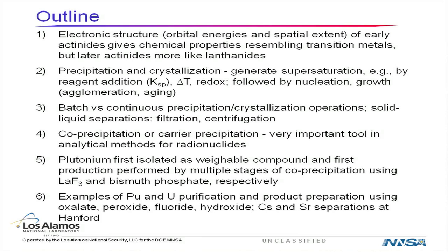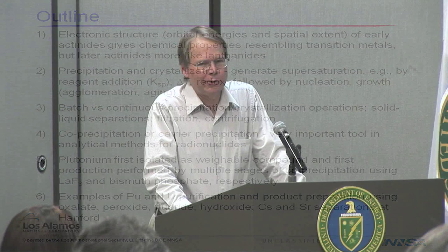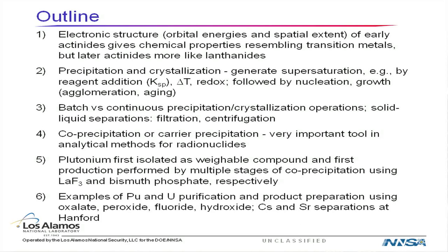Topics include nucleation, growth, agglomeration, and aging of precipitate material. Batch versus continuous processes. How you do the solid-liquid separations — things like filtration and centrifugation. Co-precipitation or carrier precipitation, which is very important especially in analytical methods for radionuclides. Plutonium was first isolated this way. And then some examples of crystallization and precipitation used for plutonium and uranium product preparation and purification, and some cesium and strontium separations examples.